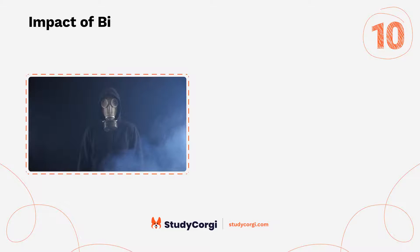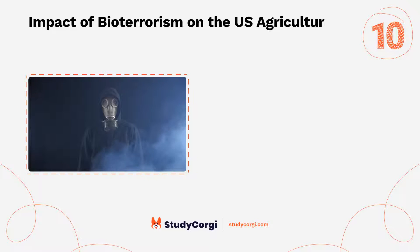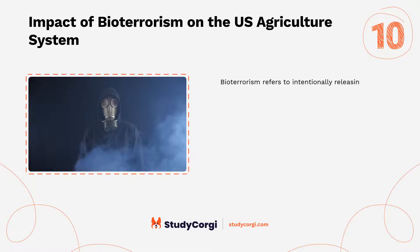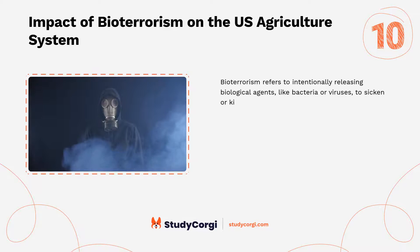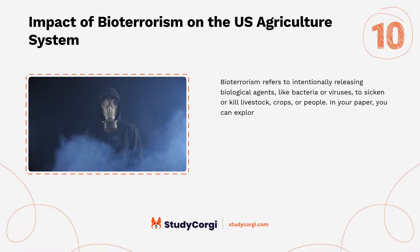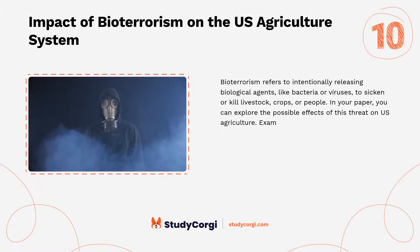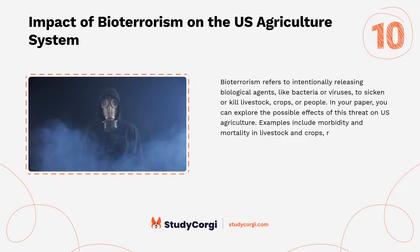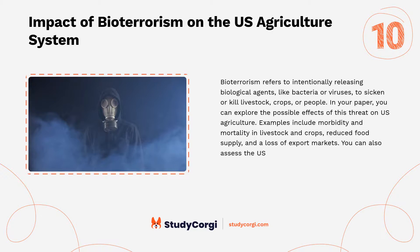Impact of bioterrorism on the U.S. agriculture system. Bioterrorism refers to intentionally releasing biological agents like bacteria or viruses to sicken or kill livestock, crops, or people. In your paper, you can explore the possible effects of this threat on U.S. agriculture — examples include morbidity and mortality in livestock and crops, reduced food supply, and a loss of export markets. You can also assess the U.S. preparedness to respond to a biological attack.